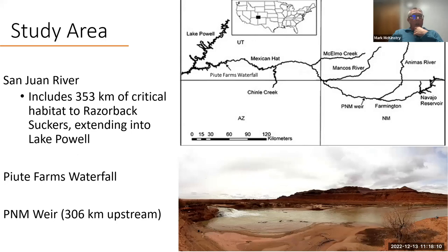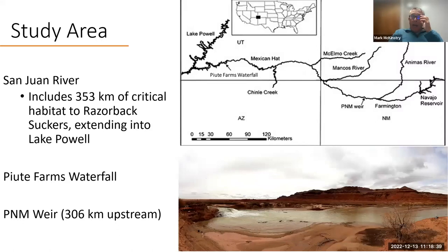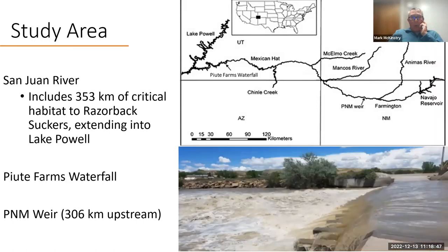Our questions for Bogart's project were: what is the need for fish passage below the Paiute Farms waterfall, and what is the behavior of razorback suckers after they have moved up past the barrier? The San Juan River includes 353 kilometers of critical habitat, from Nescai Canyon in Lake Powell all the way upstream to Farmington. Within this reach we have two major barriers: the Paiute Farms waterfall and PNM. We also have one called Hogback, but that's been mitigated with some fish passage — though it's not always operating.